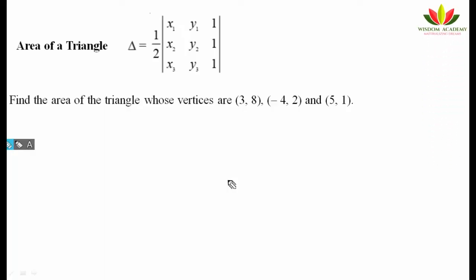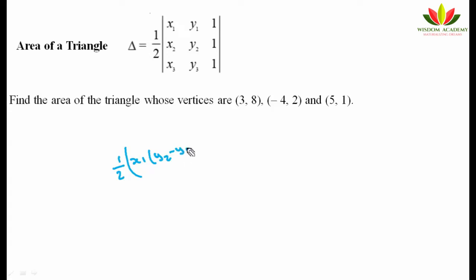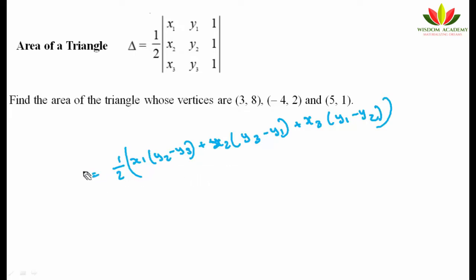Hi guys, today we are going to see determinants, second part. The second part starts with the area of triangle. This is the formula for area of triangle: 1/2 times [x1(y2 - y3) + x2(y3 - y1) + x3(y1 - y2)]. You might have studied this in coordinate geometry in class 10th.